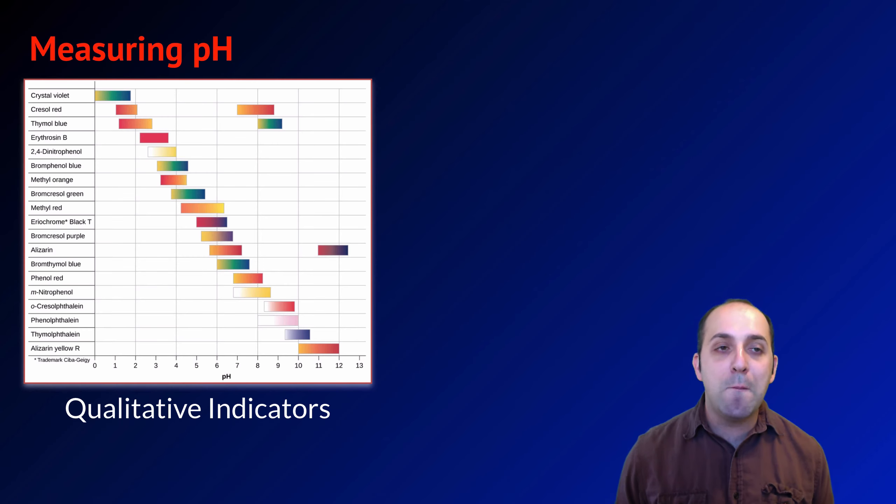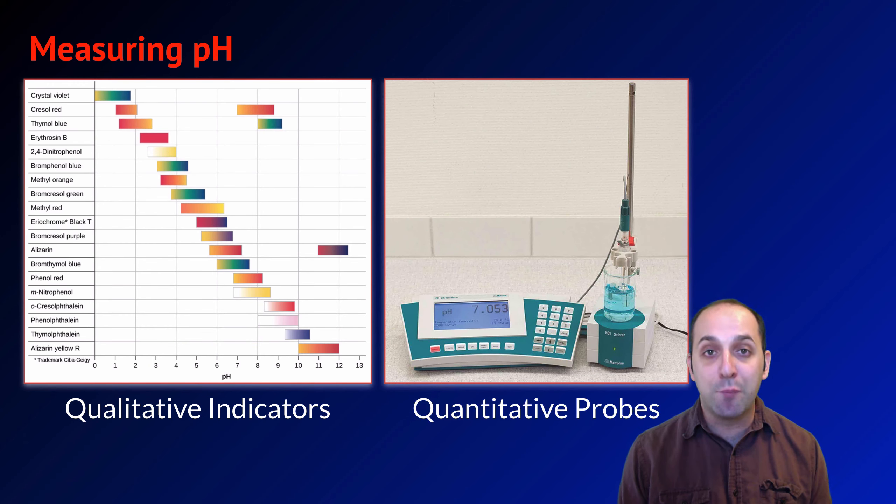So now that we know what pH is, we need to have ways of measuring it. We've already talked about qualitative indicators of pH. That would be our indicators. We have reference table M to help us remember the different ranges that certain indicators change. We also might want direct quantitative measurements of pH. For that, we'll use quantitative probes. Electric probes that use the electrical conductivity of the solution in order to determine the pH of that particular solution.